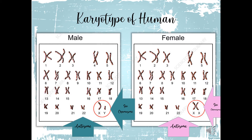Always remember that the sex chromosome of the male is XY, and the female is XX. And that is the karyotype of humans.